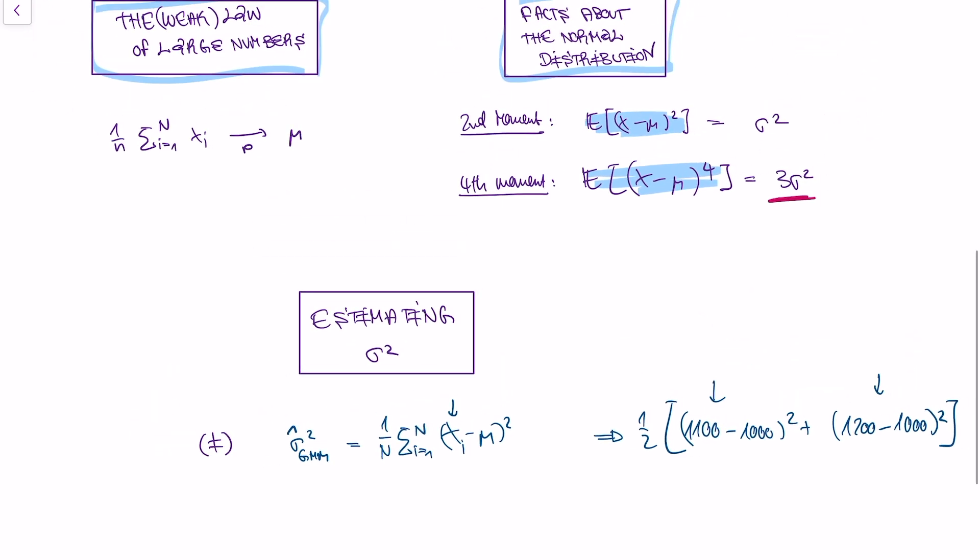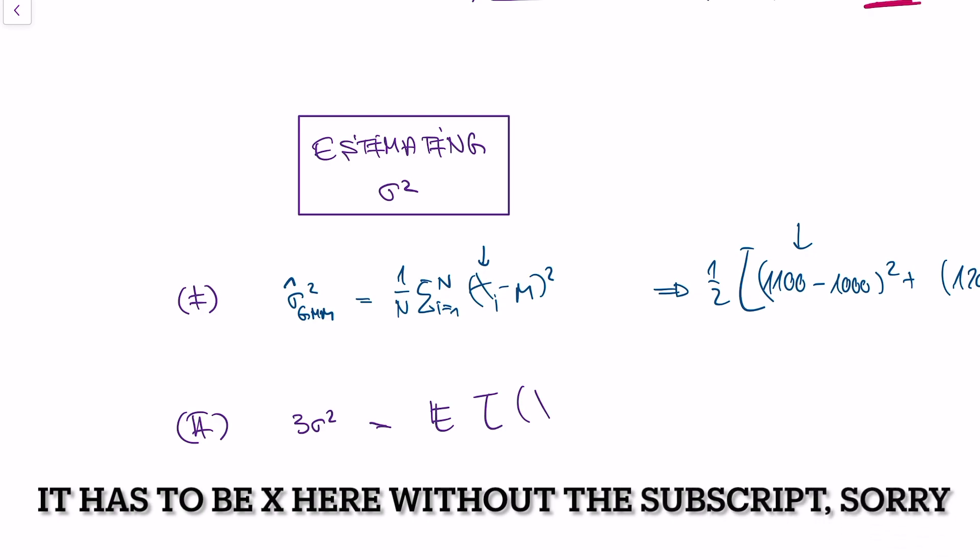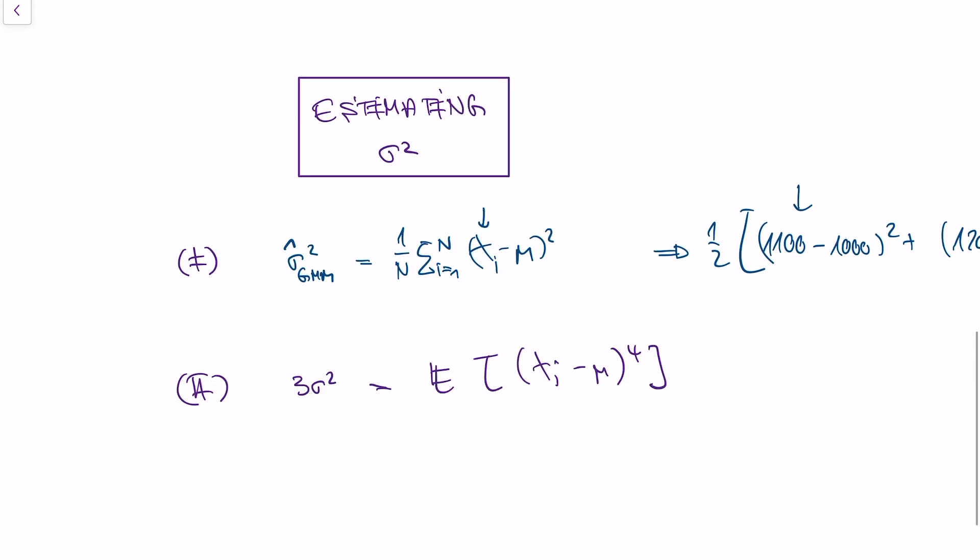But here's what we could also do, we could also use the equation for the fourth moment. So what does the equation for the fourth moment say? Well, the equation for the fourth moment says, three sigma squared is equal to the expected value of xi minus mu to the power of 4. And I think you know what I'll be suggesting now.